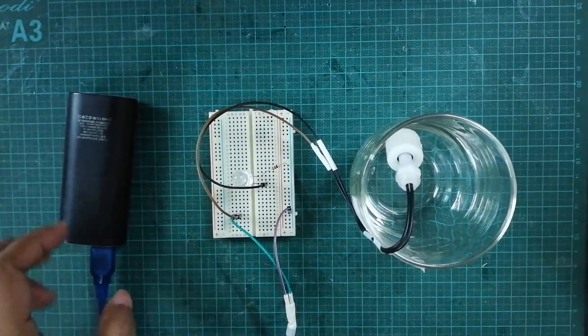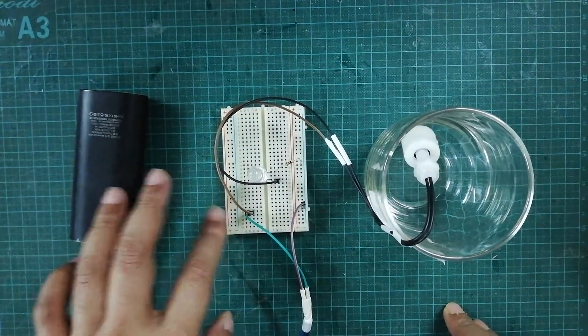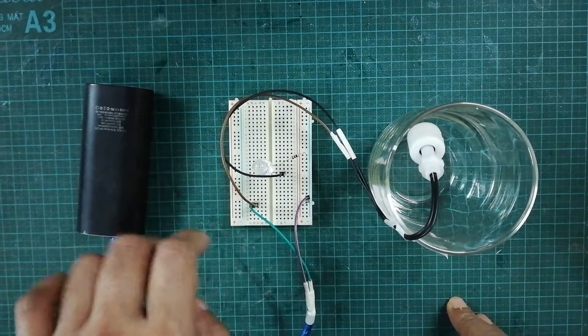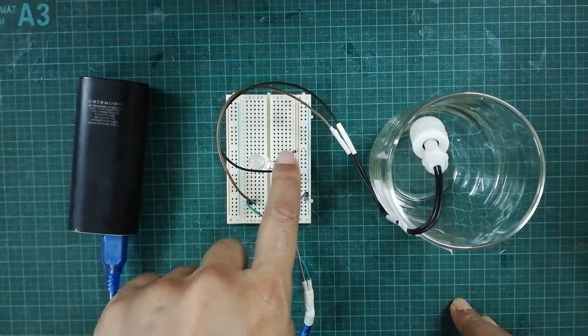Here I'm giving power from a 5-volt power bank to this breadboard, and I've inserted one LED and a current limiting resistor.